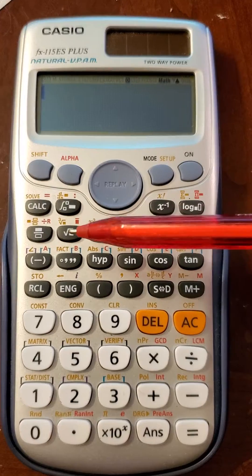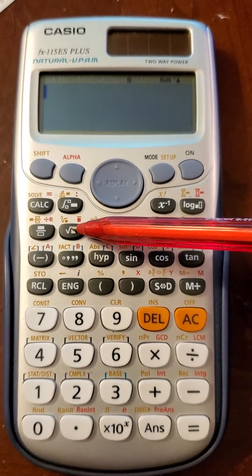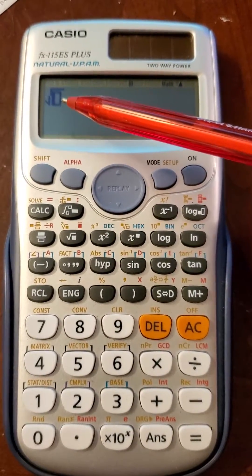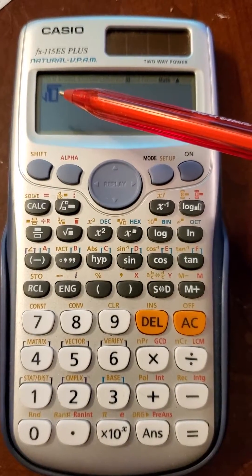First thing we need to do, we need to point out the square root button, right here. And if I push it, it's going to allow me to input whatever number I want under the square root.